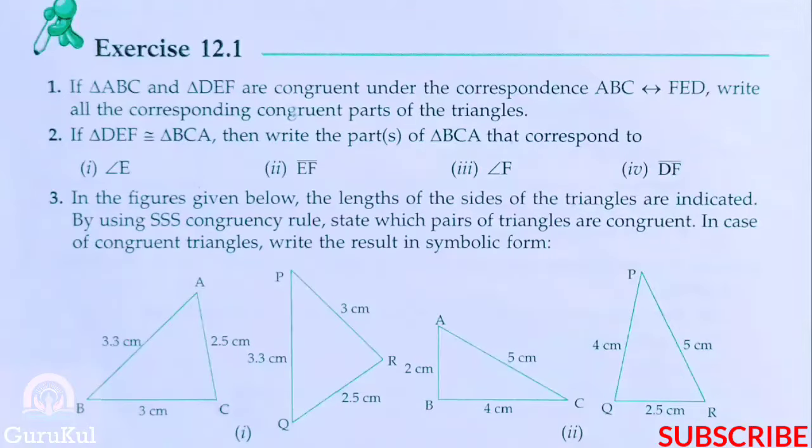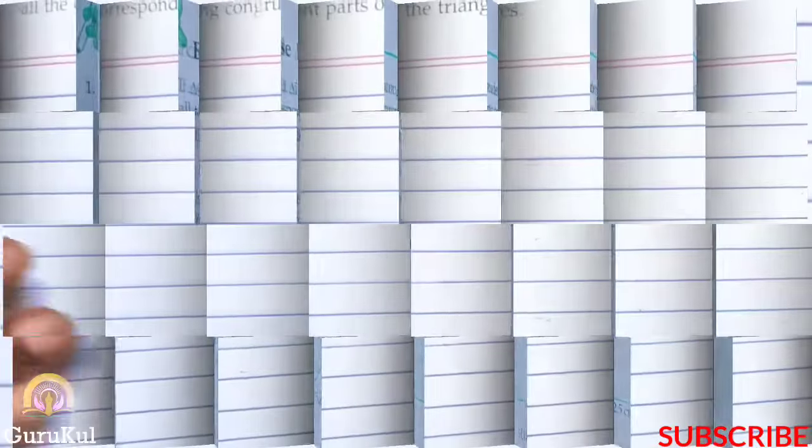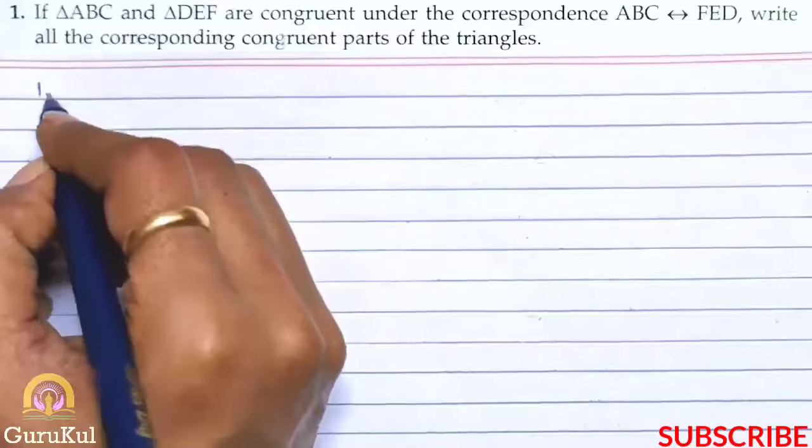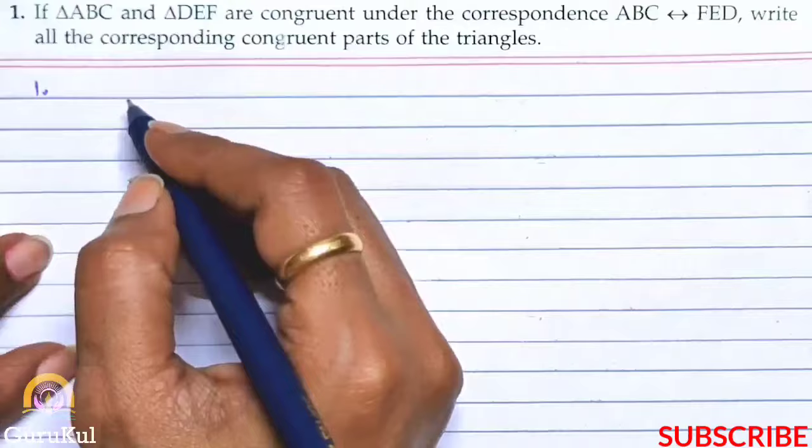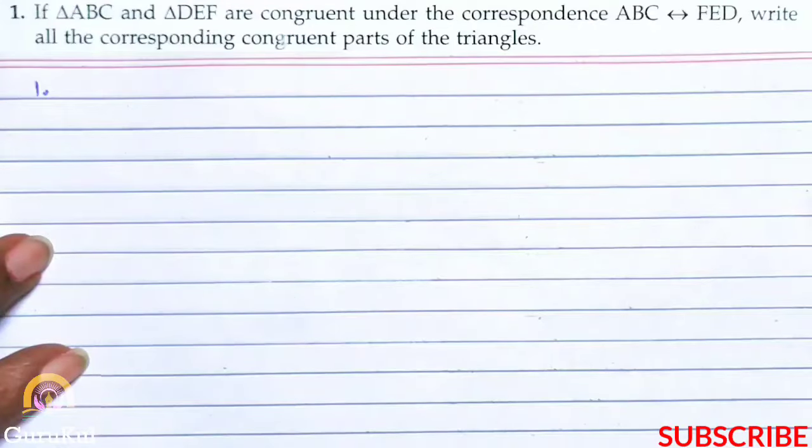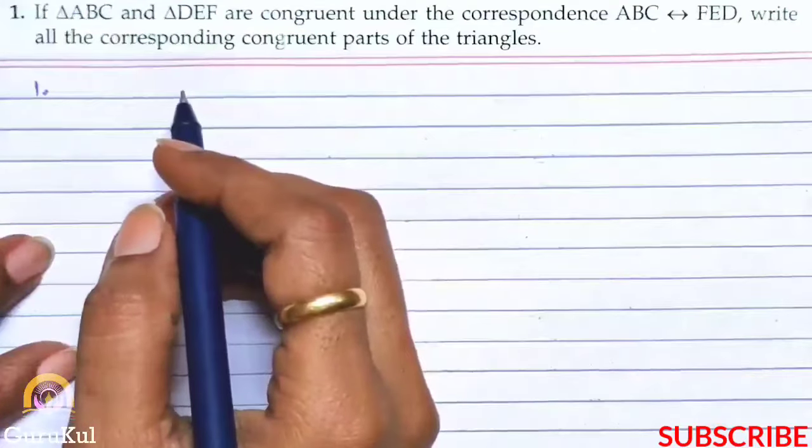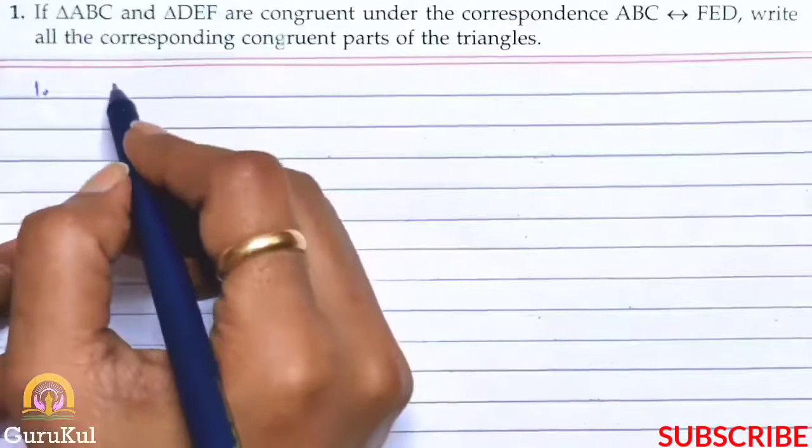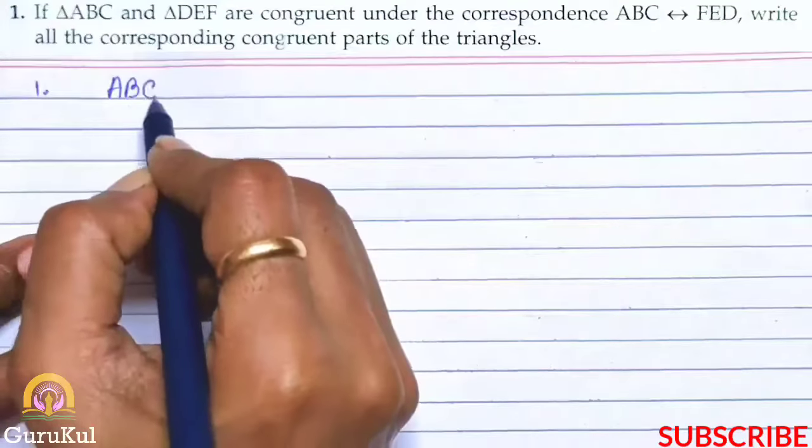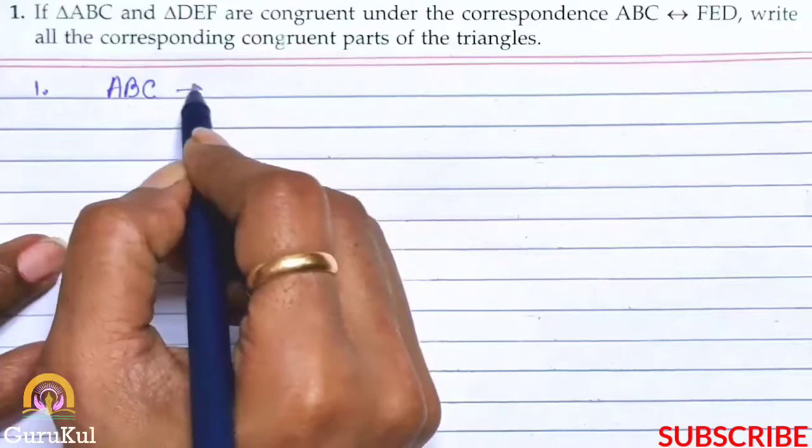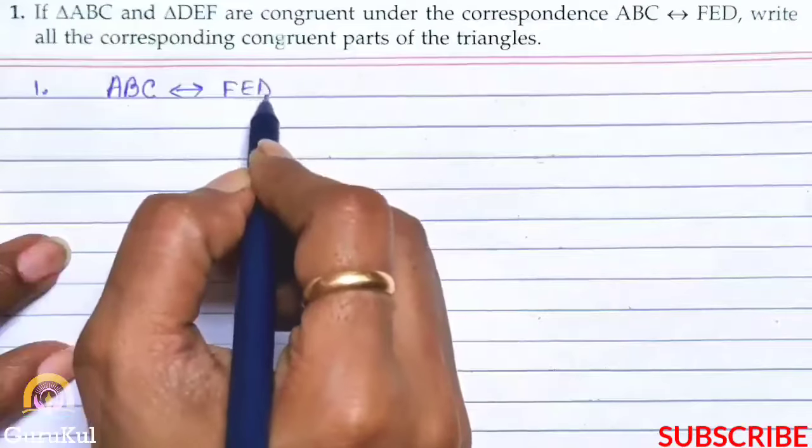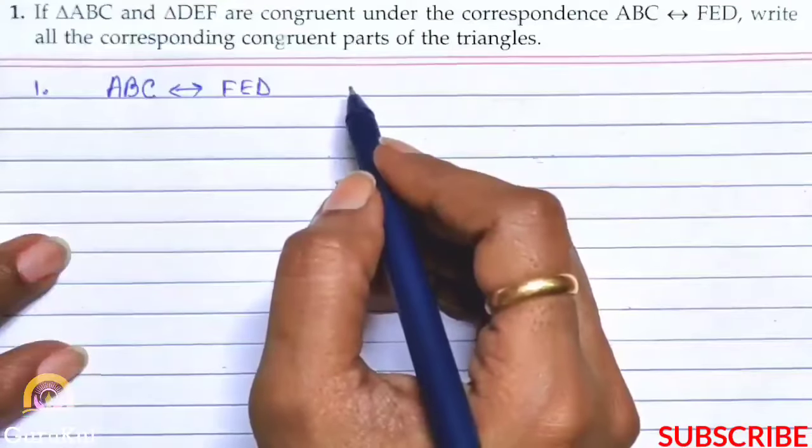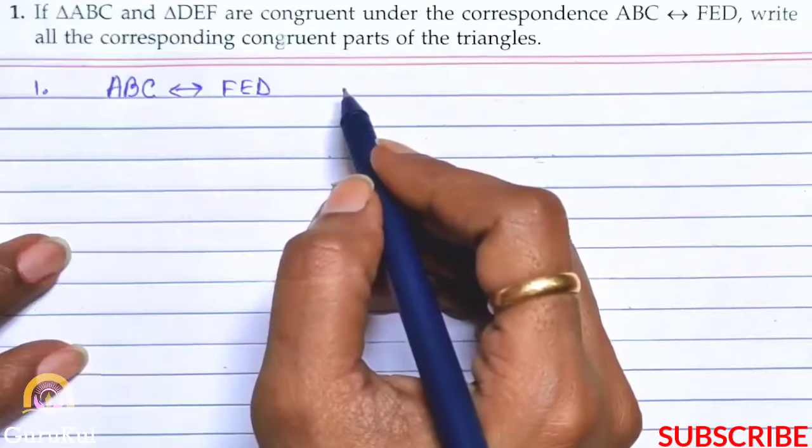Today I am going to start with part 1 of exercise 12.1. Now question number 1 of exercise 12.1. The question is if triangle ABC and triangle DEF are congruent under the correspondence ABC correspondence to FED, then write all the corresponding congruent parts of the triangle.